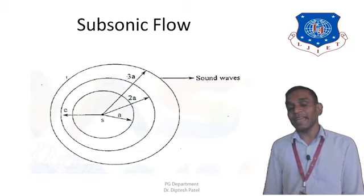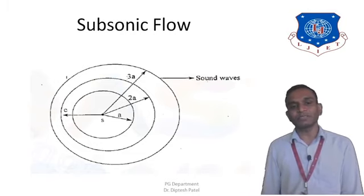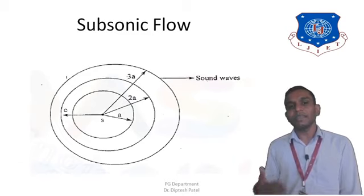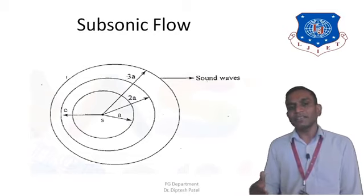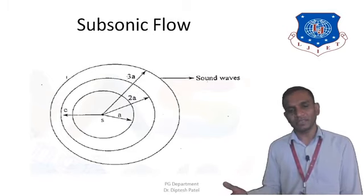Next is the subsonic flow region. In subsonic flow, the velocity of the source of disturbance is again less than the velocity of sound. The waves generated from the source of disturbance are spherical in form, but they are not symmetrical — they do not have a pattern of symmetrical nature.